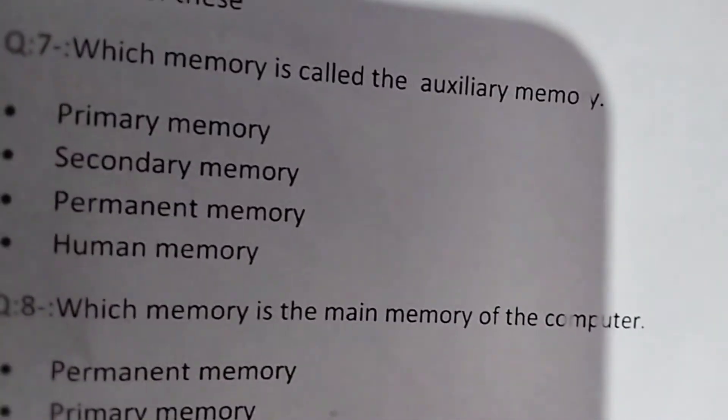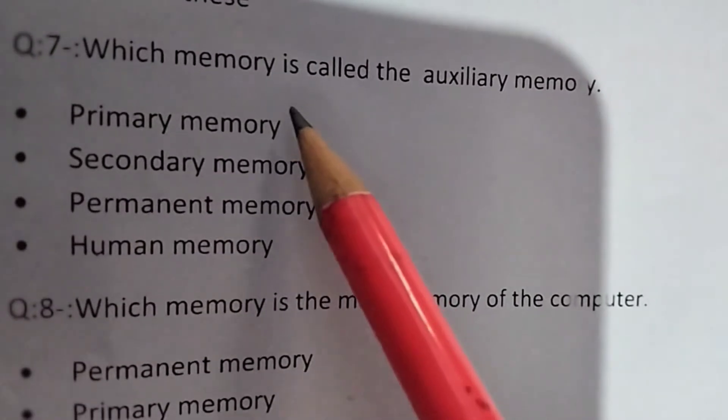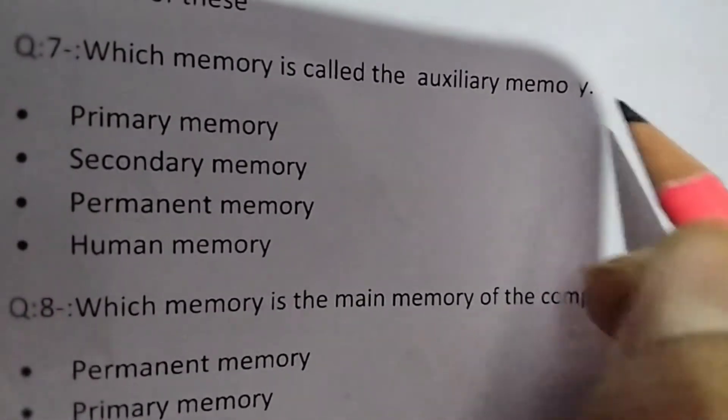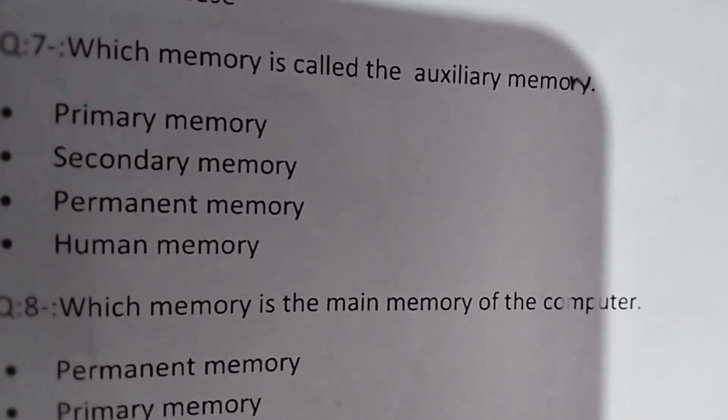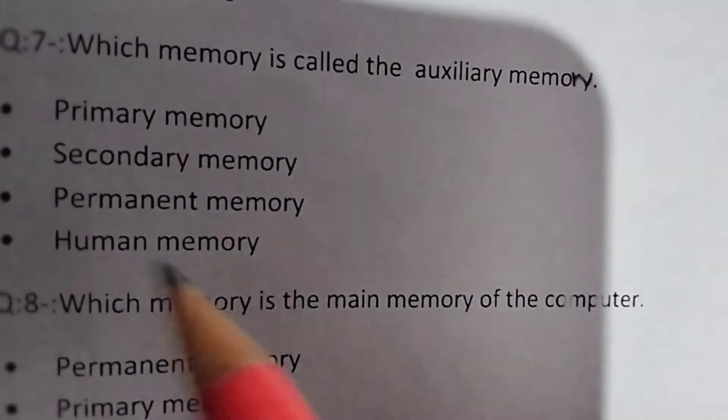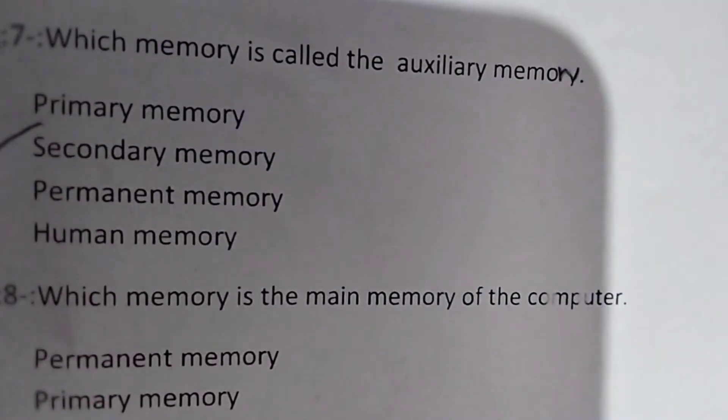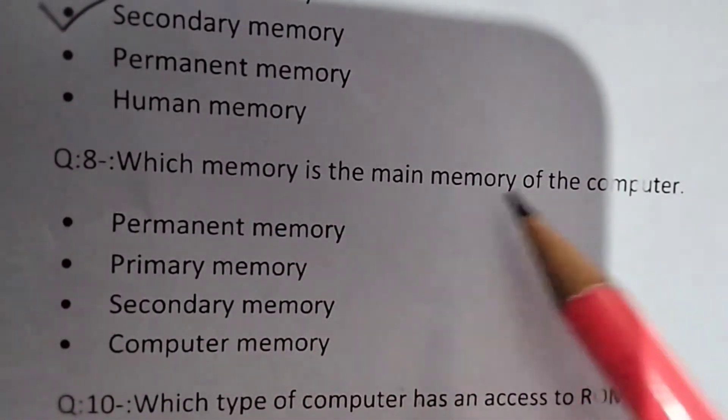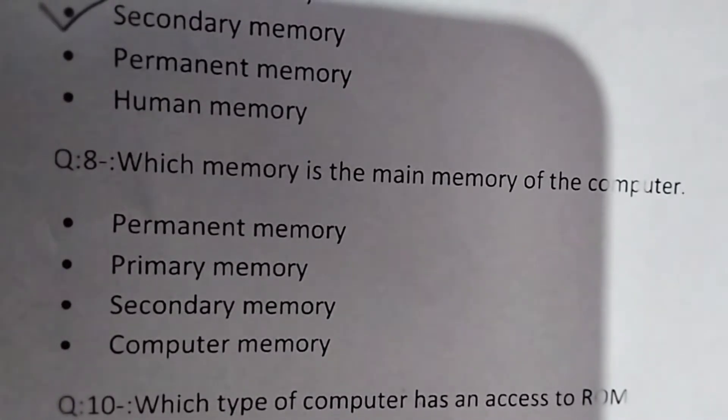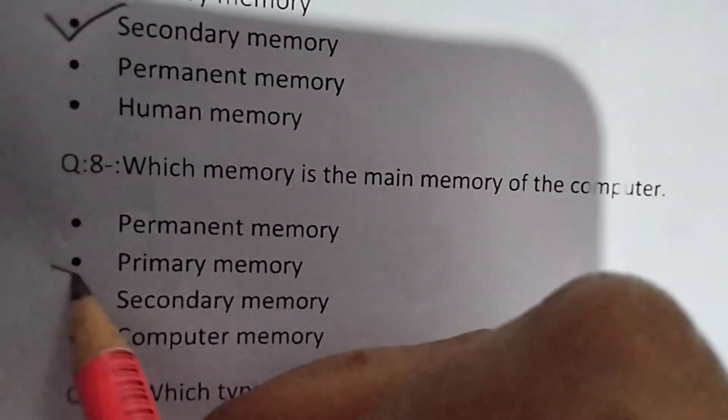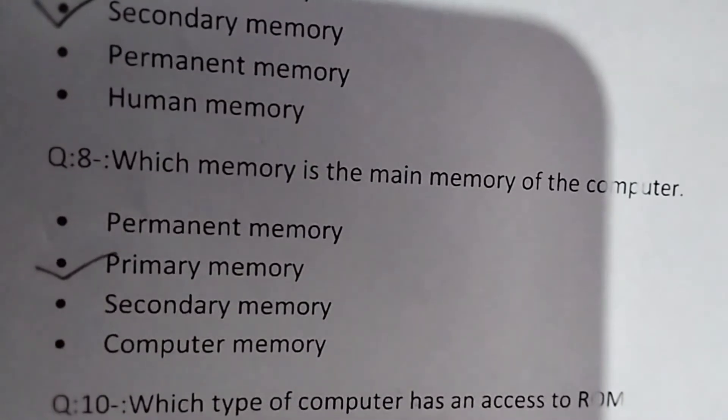Now next is: Which type of memory, which memory is called the auxiliary memory? Which memory is the auxiliary memory? Which memory is the auxiliary memory of the computer? Permanent memory, primary memory, secondary memory or computer memory. So answer is primary memory.